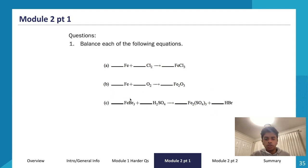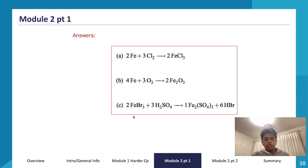The final balanced equation is: 2FeBr3 + 3H2SO4 → Fe2(SO4)3 + 6HBr. That's how to balance a chemical equation involving polyatomic ions.